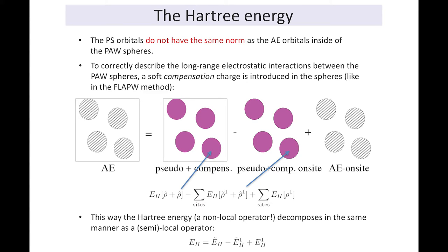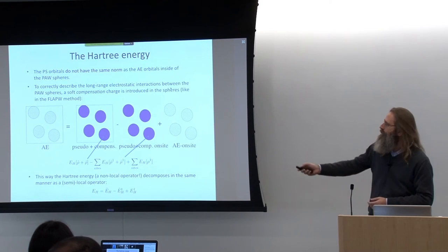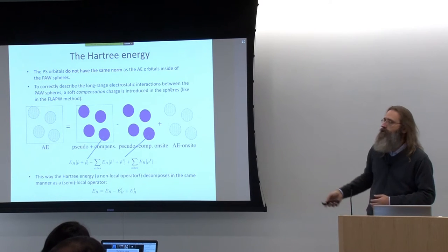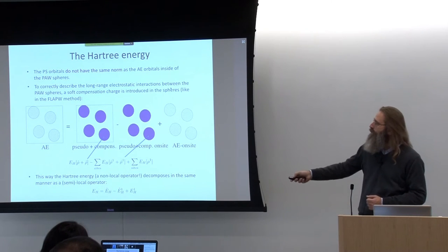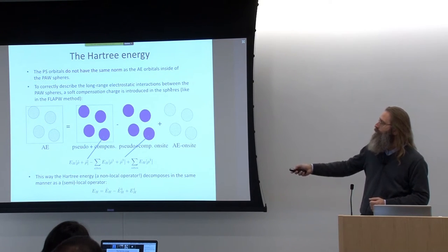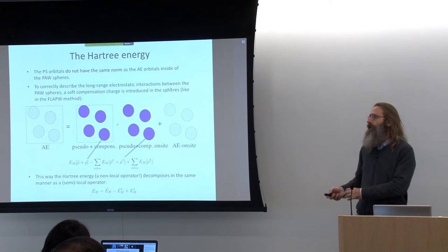For the Hartree energy, this means we again separate the energy contributions into a part evaluated completely on the plane wave grid, and two parts evaluated on the radial grids. For non-local operators with these tricks using compensation charges, we can ensure that we can decompose everything into three contributions where there's no cross-talk between the plane wave grid and the radial grids.